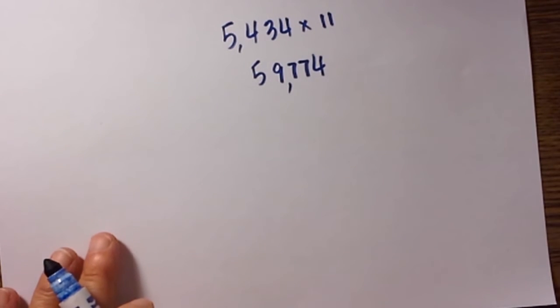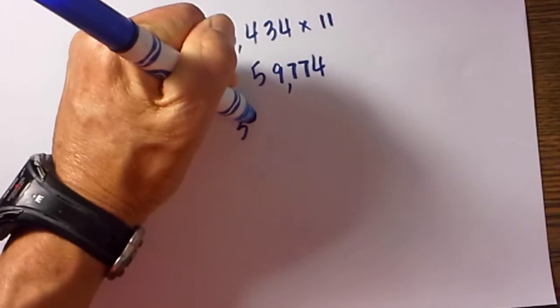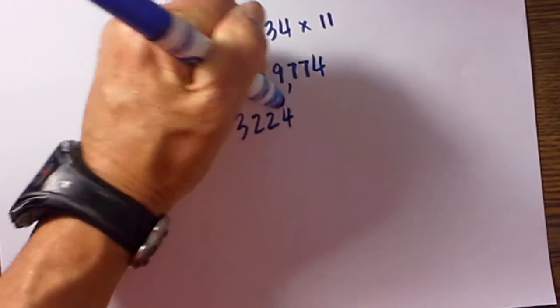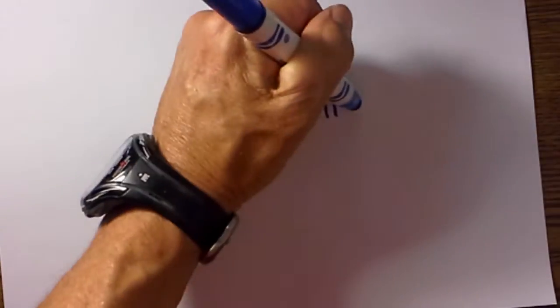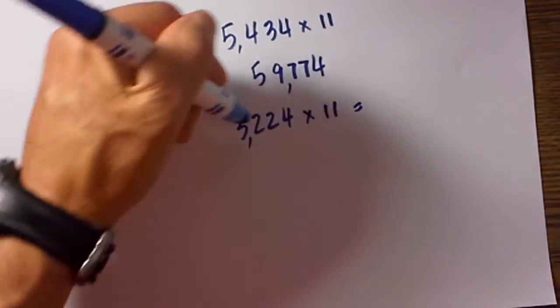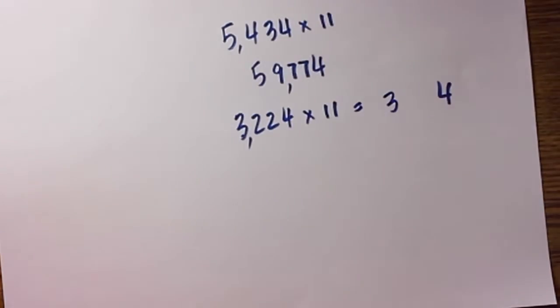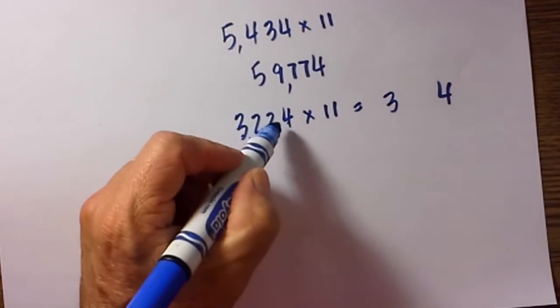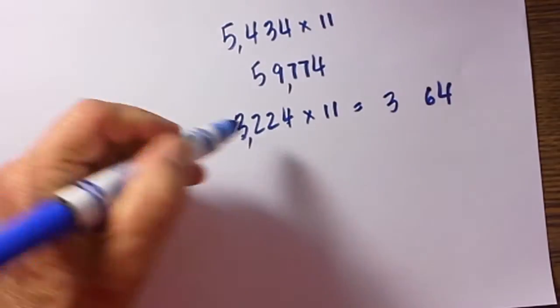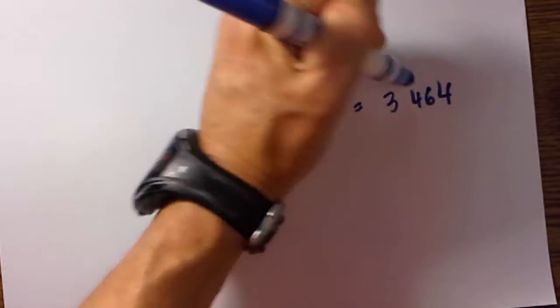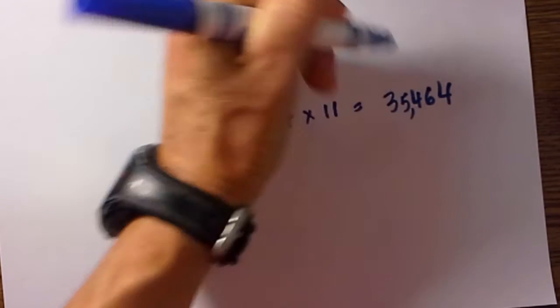Let's work a couple more examples, and once you do, I think you will see that this is really simple and quick. Let's go with 3,224 times 11. So the answer is going to be 3, then 4 at the end. Then we have 4 plus 2 is 6, 2 plus 2 is 4, and 3 plus 2 is 5. So the answer is 35,464.